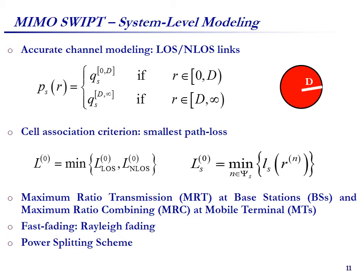Now we move to the second part of my talk today: the system model. In this work, we consider accurate channel modeling which takes into account both LoS and NLoS links using a two-ball model. The reason behind the LoS and NLoS link distinction is due to the impact of blockage and shadowing effects. In this paper, the cell association is based on the smallest path-loss, meaning that the base station which provides the smallest path-loss becomes the serving base station. We also consider the maximum ratio transmitting, MRT, and maximum ratio combining, MRC, schemes at the base station and mobile terminal. Power-splitting is used in this paper.